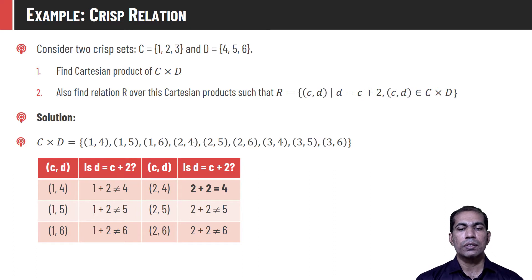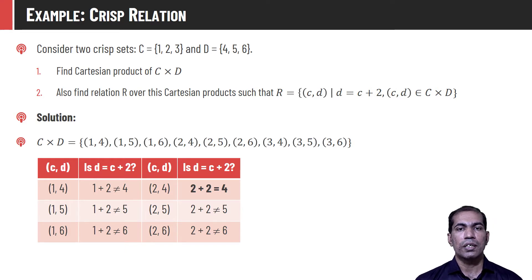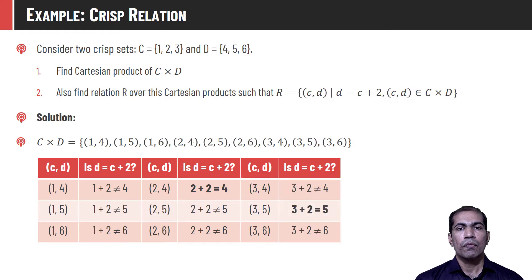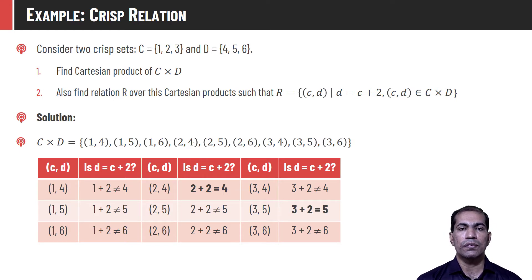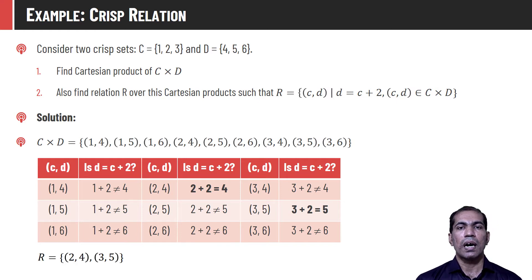For the next three tuples (2,4), (2,5), and (2,6), the first tuple has D = 4 and C = 2, so it satisfies the condition D = C + 2, and will be included in relation R. For the last three tuples (3,4), (3,5), and (3,6), the tuple (3,5) satisfies the condition so it will be included in relation R. So finally the relation for the given sets and given condition R = {(2,4), (3,5)}, and as we can see it is a subset of the Cartesian product.